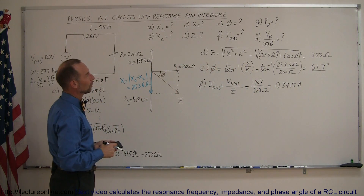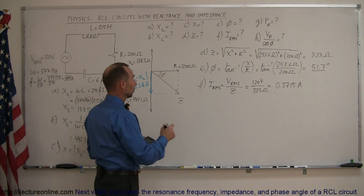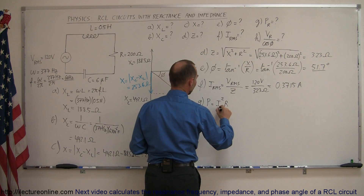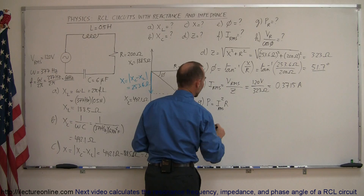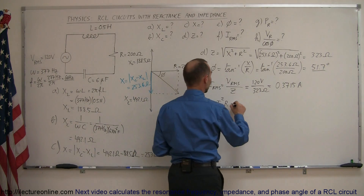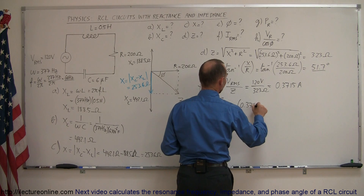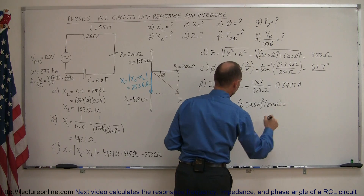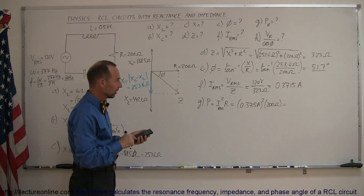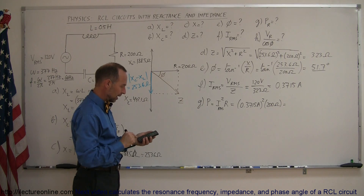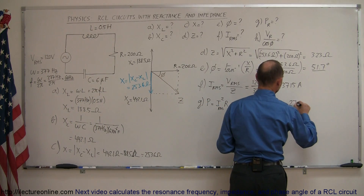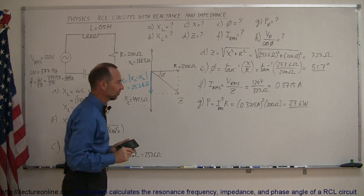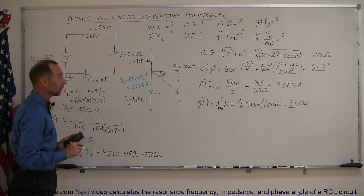Next, we want to find the power consumed by the resistor. The power consumed equals I squared times R — in this case IRMS squared times R. So this equals 0.3715 amps squared, multiplied times the resistance of 200 ohms. We square that amount and multiply by 200, and we get a power consumption of 27.6 watts. That's a hefty consumption for a resistor — do not touch it after a while, because it will get pretty hot.